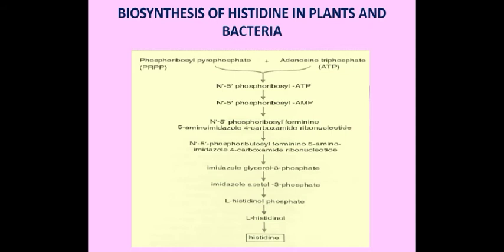Now, the biosynthesis of histidine in plants and bacteria. Histidine is synthesized from ribose-5-phosphate and is the only amino acid synthesized from ribose-5-phosphate. Histidine is an essential amino acid and is not synthesized in animals; its biosynthesis is known only in plants and bacteria. Three precursors are required: ribose-5-phosphate in the form of PRPP (phosphoribosyl pyrophosphate), which provides 5 carbons to the carbon skeleton; ATP, which contributes a carbon and a ring nitrogen; and glutamine, which provides the second ring nitrogen.